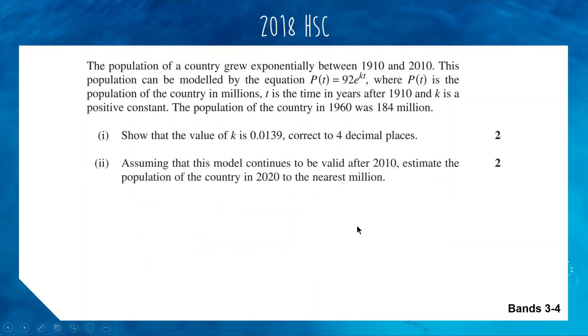Now part 2: assuming that this model continues to be valid after 2010, estimate the population of the country in 2020 to the nearest million. We have our function now. We have the value of k. We can use this rounded version because the question gave it to us. We're trying to find the population in 2020, so 2020 is 110 years after 1910. We're finding the population when t equals 110.